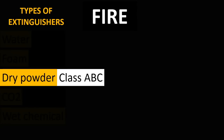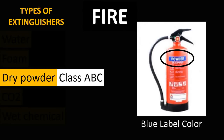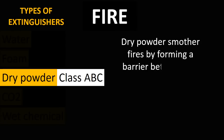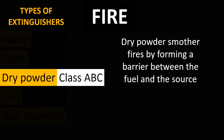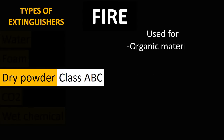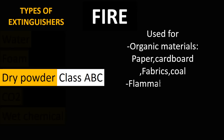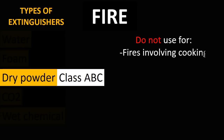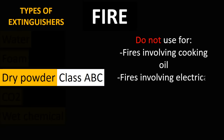The third type of fire extinguisher is dry powder. Dry powder type fire extinguishers can be used in Class A, Class B, or Class C fires and they have a blue label color. Dry powder smothers fires by forming a barrier between the fuel and the source. Dry powder fire extinguishers are used for organic materials such as paper, cardboard, fabrics, and coal; flammable liquids such as paint and petrol; and flammable gases such as LPG and acetylene.